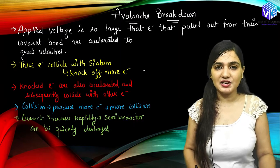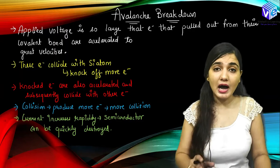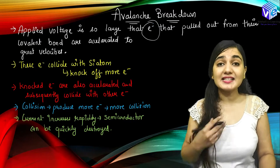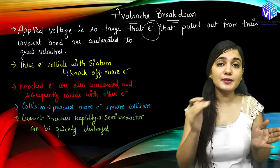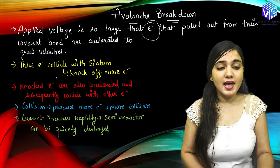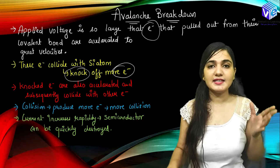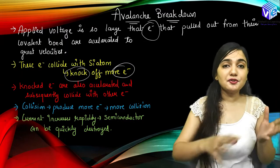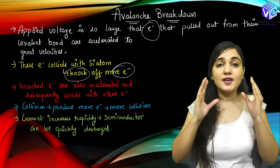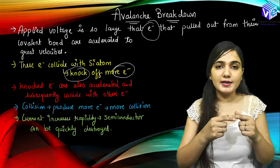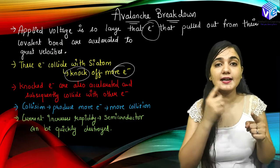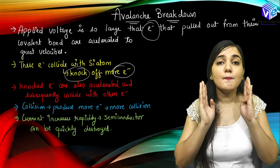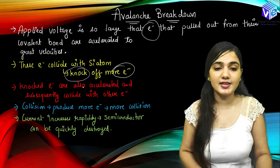Now let's understand avalanche breakdown. In avalanche breakdown, we are applying a very high electrical voltage, so high that the electron that is pulled out is going to accelerate with a very high velocity. When this electron accelerates with a very high velocity, it is going to strike another electron and knock off more electrons. You must have seen avalanches coming down a hill — a snowball comes down the hill and increases in size. In the same manner, one electron knocked out due to the avalanche effect is going to strike out one more electron. Now two electrons will strike out four, four will strike out eight — so we will be having more and more electrons, resembling an avalanche on the mountains.